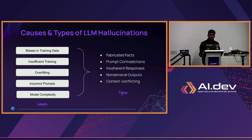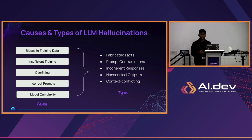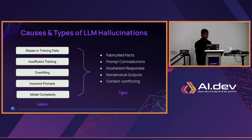Another cause is incorrect prompts — when you give the application a wrong prompt, it's going to give wrong outputs. Then there's model complexity: these LLM models are trained on millions to billions of parameters, which introduces a lot of uncertainty in producing outputs. These are some basic causes why LLMs hallucinate, and it's a pretty big problem if you're building any application for enterprise-level production, because you don't want your app to go wrong and create a bad user experience.